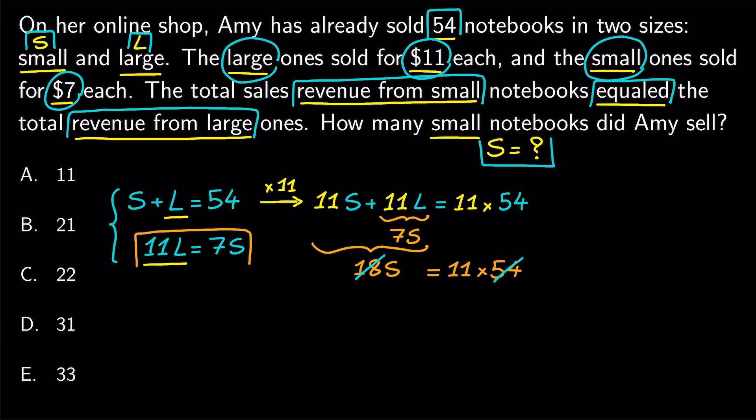We divide both sides by 18 and get S equals 11 times 3, which is 33, and that's it. The answer is E.